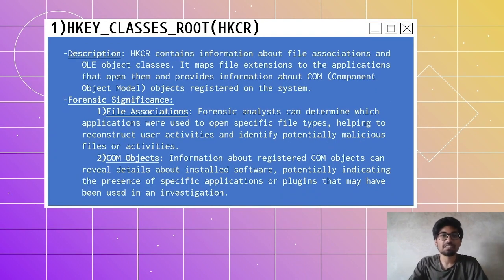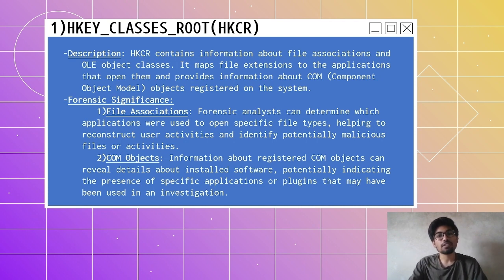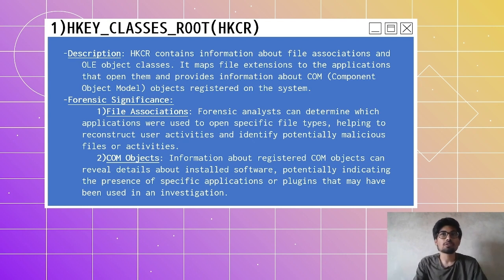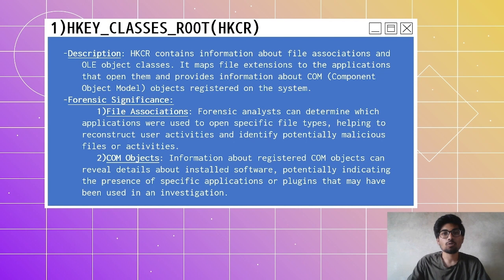The first one is HKEY Classes Root. HKEY stands for 'Handle to Registry Key.' In Classes Root, it basically contains all the information about which files are present in your system and what application you are using to open those files. For example, I have opened this presentation using PowerPoint — I used the PowerPoint application to open this file.